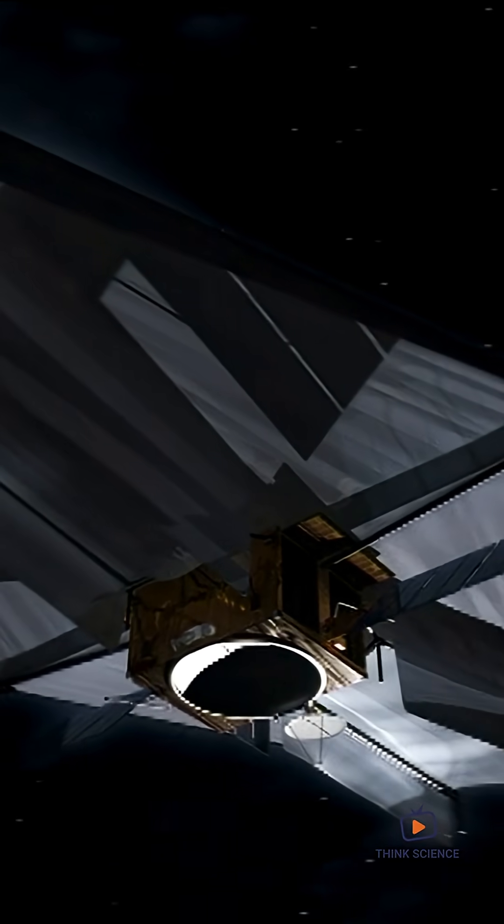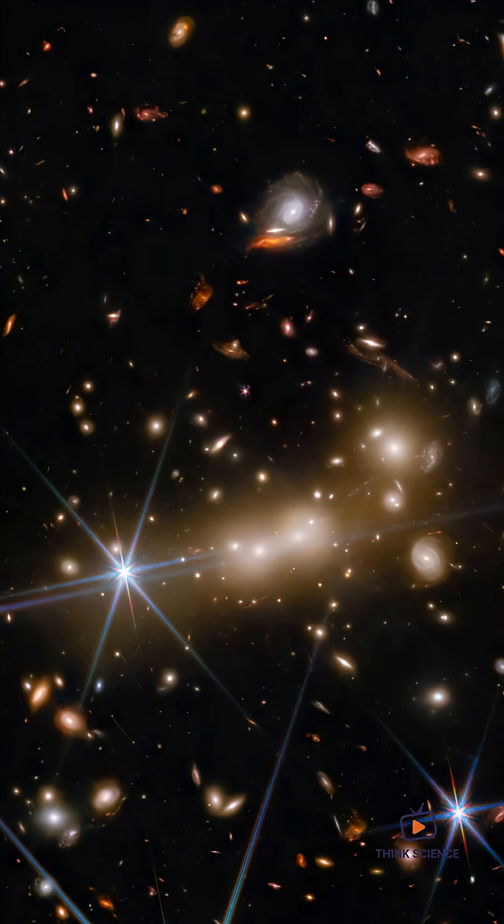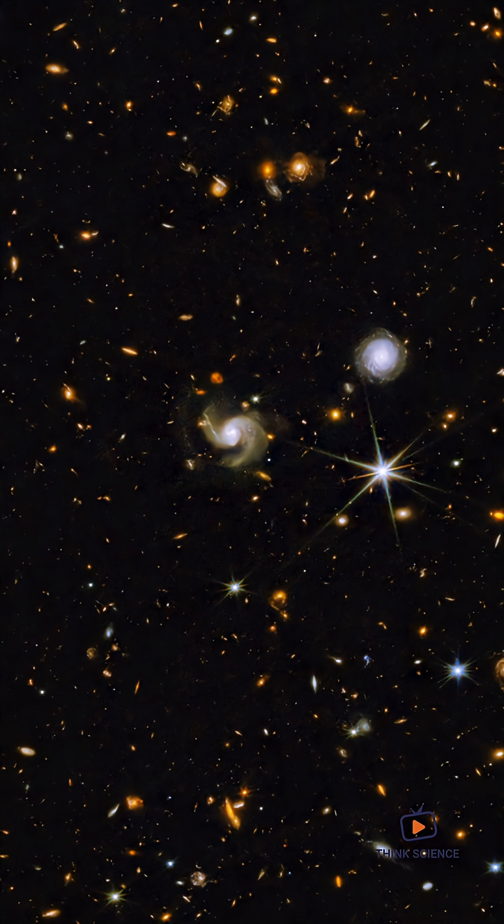The James Webb Telescope just delivered a surprise astronomers didn't see coming. Deep in the early universe, Webb spotted galaxies that are way too big, way too old, and way too bright to exist only a few hundred million years after the Big Bang.